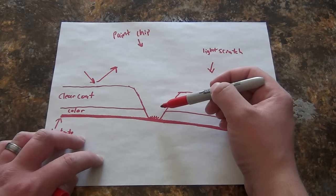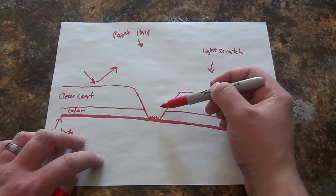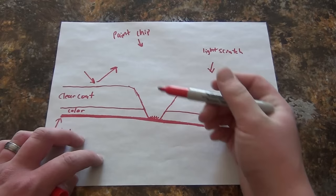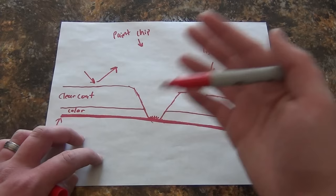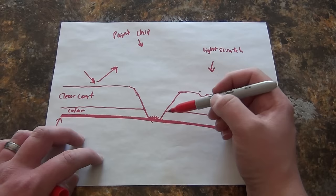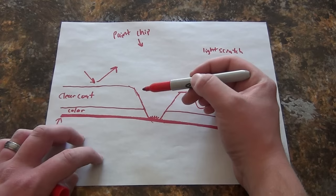In a paint chip like this, there's a much deeper portion that's been taken out. The actual paint is missing and we need to fill it in with something. Otherwise, you just have the bare metal exposed, it could rust, and it looks very nasty. So this would be a situation in which we'd actually want to use touch-up paint. Something like this, we could compound and polish out pretty easily.